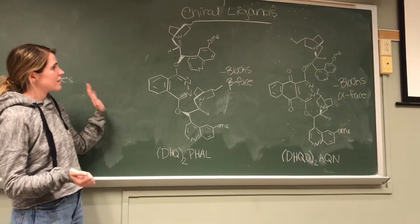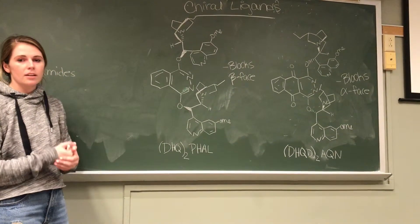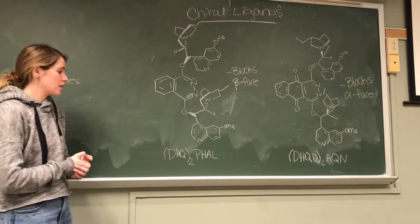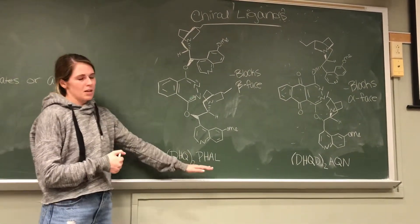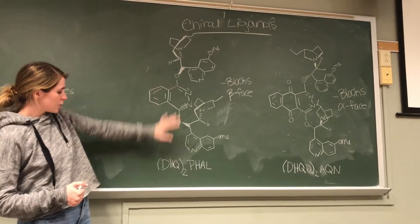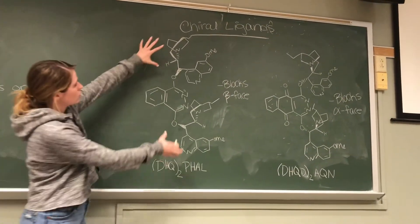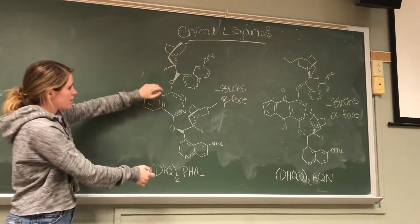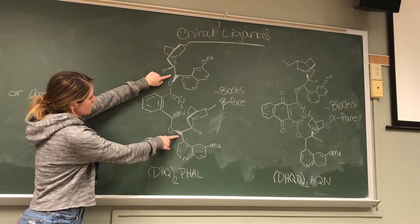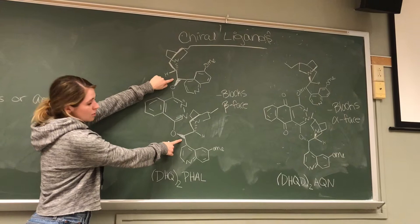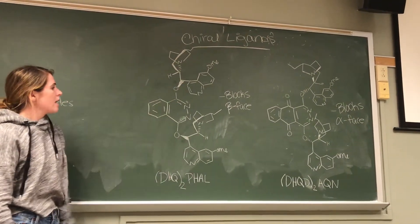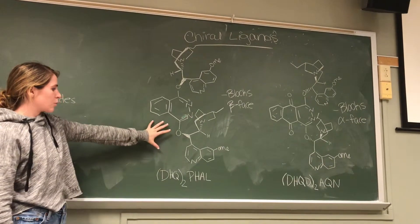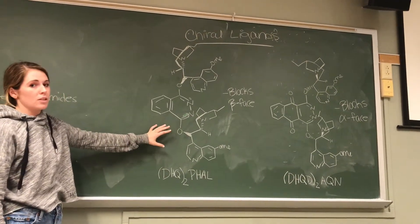So when we're looking at the chiral ligands, these are two common ones that are used in the asymmetric aminohydroxylation. And so this one here, DHQ2PHAL, the PHAL corresponds to the center group. The DHQ is these two large groups out here. And if we look at the stereochemistry of these two groups, we see that they're actually blocking the beta face, so the beta face that's coming out of the board. And then this will force the reactions to add the new groups to the alpha face.